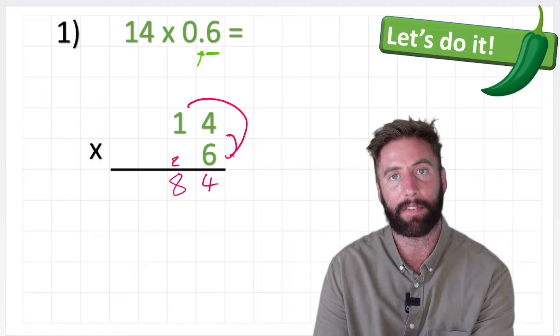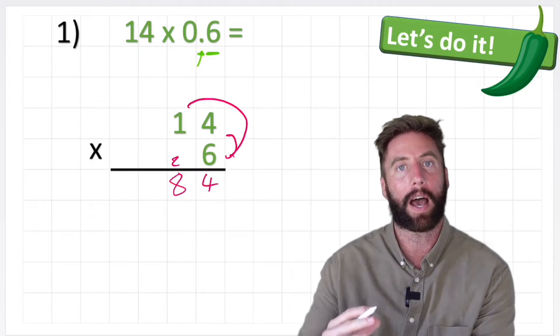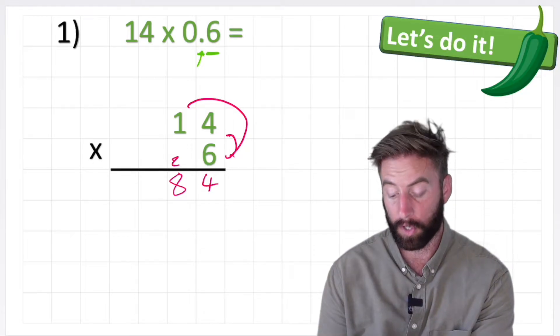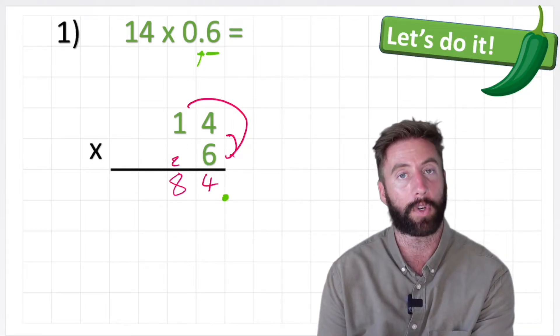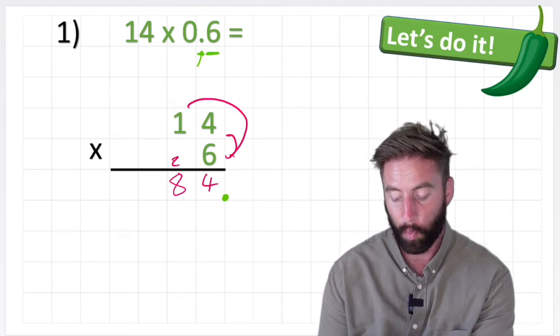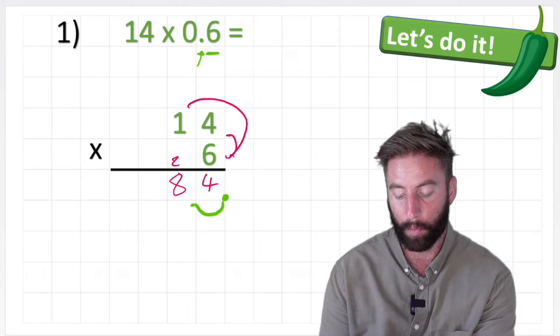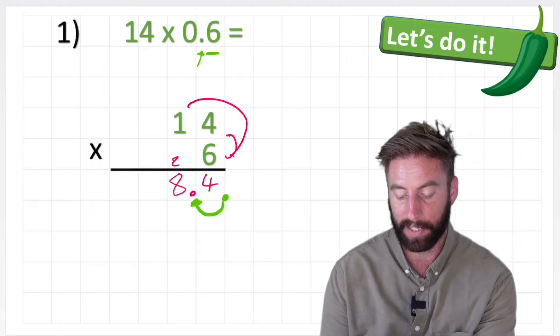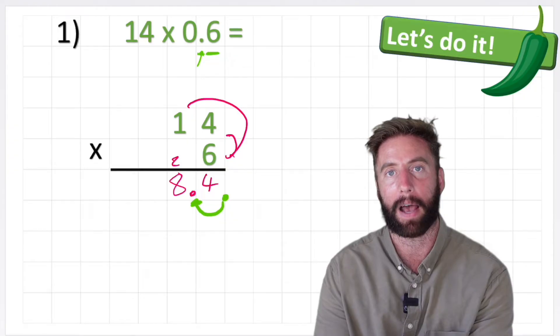So because there's one place after the decimal in our question, we now need to come back one place with our decimal in our answer. So to start with our decimal where it would be at the moment, which is just here after the 84, we need to come back one place and put our decimal in its new place between the 8 and the 4. One place back.